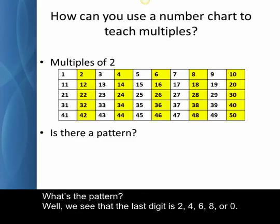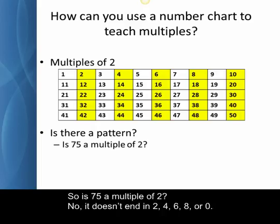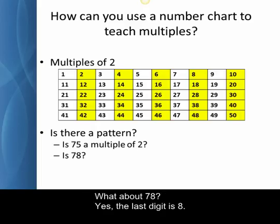We see that the last digit is 2, 4, 6, 8, or 0. So is 75 a multiple of 2? No, it doesn't end in 2, 4, 6, 8, or 0. What about 78? Yes, the last digit is 8.